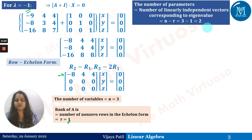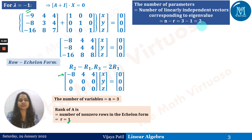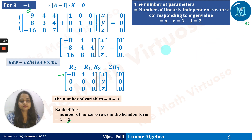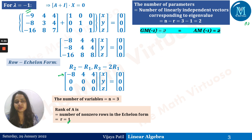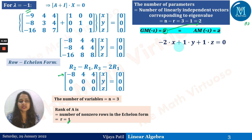Please follow the previous session where I explained in detail when to go for diagonalization and when not to, and what algebraic and geometric multiplicity are. The geometric multiplicity of −1 is 2, which matches n−r = 2. Therefore, AM(−1) = GM(−1) = 2, and they coincide. So the given matrix is diagonalizable.